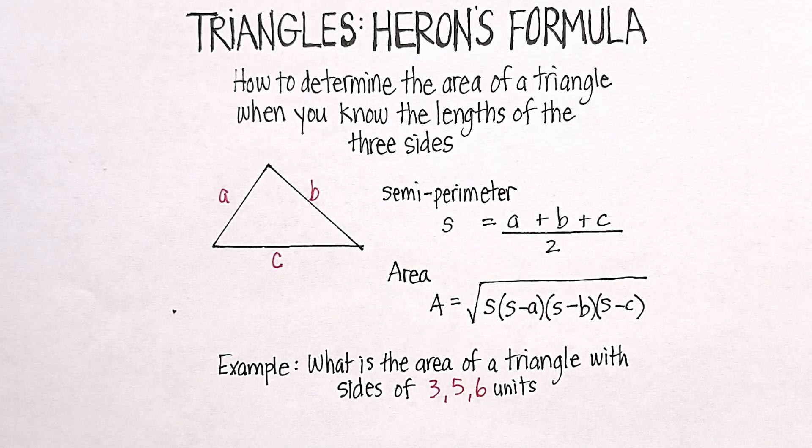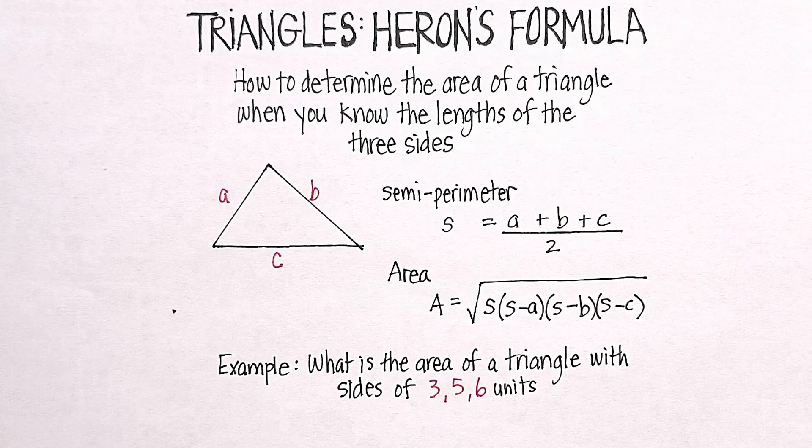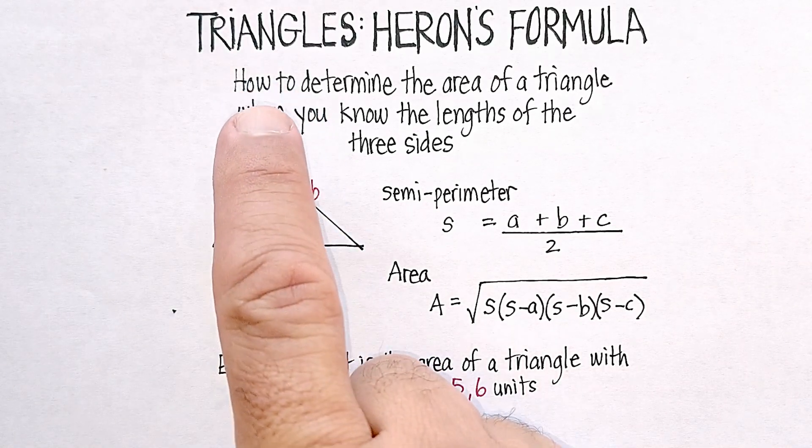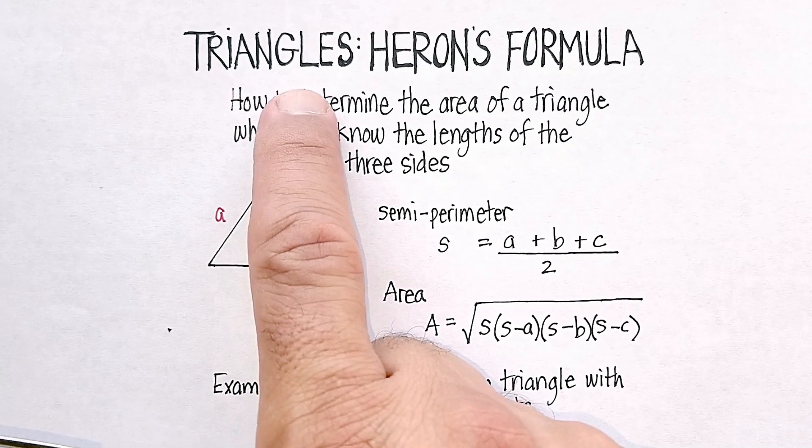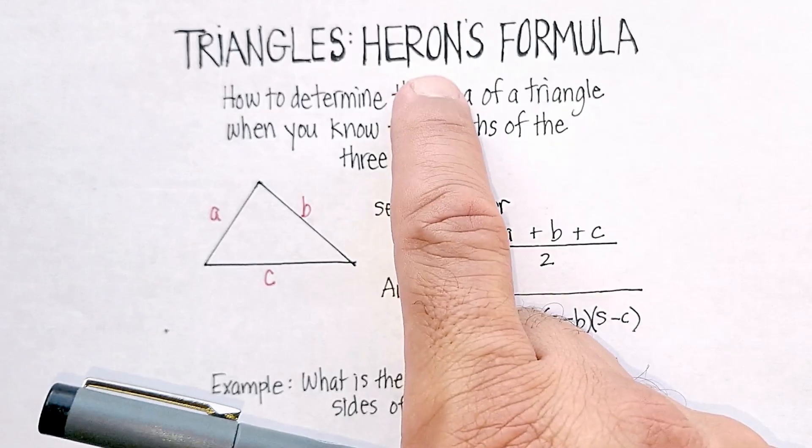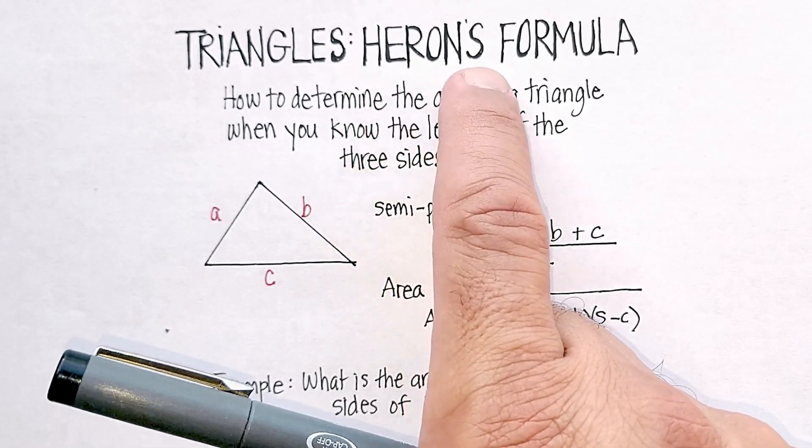In this video we're going to go over a really interesting formula to find the area of a triangle. It was discovered well over 2,000 years ago by a gentleman named Hero, and this is called Heron's Formula.